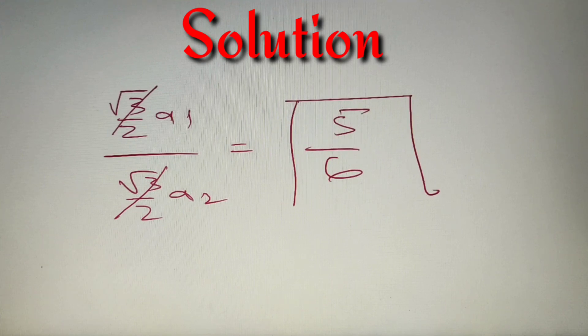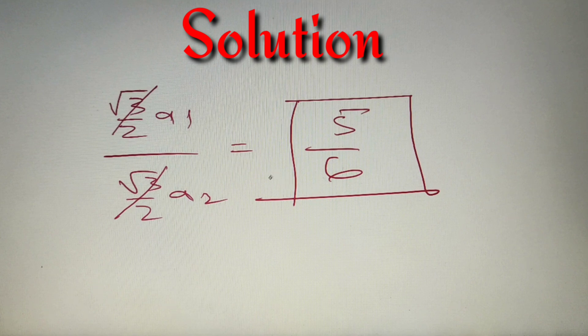And we have just got that the ratio of a1 by a2 is equal to 5 by 6. So we can say that the ratio of their altitudes is equal to 5 by 6, and according to our given options it is option number C. So our final answer is option number C, 5 is to 6.